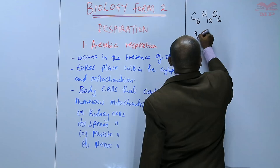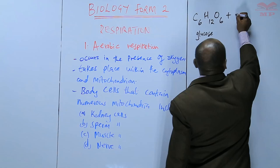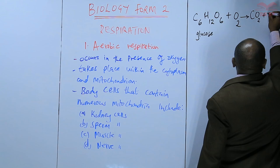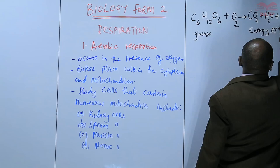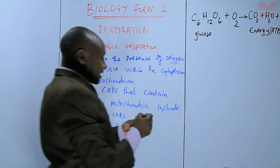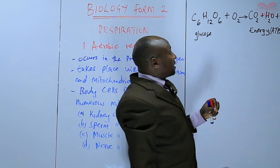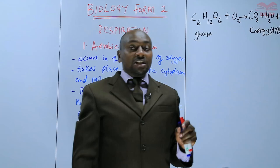We want to see how that glucose is broken down in the presence of oxygen — what we call oxidation. So glucose plus O2 gives us carbon dioxide (CO2) as a product, there is also water, plus energy. This energy is in the form of ATP, which stands for adenosine triphosphate.